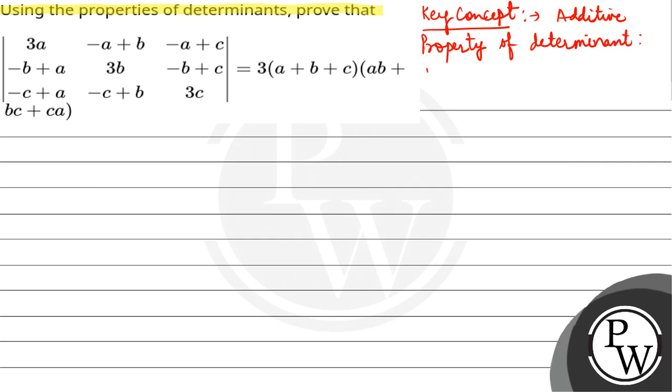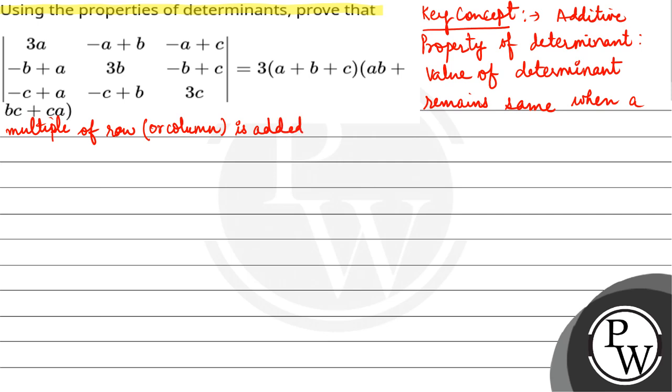Which states that the value of determinant remains same when a multiple of a row or column is added to another row or column.